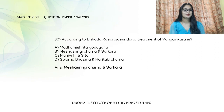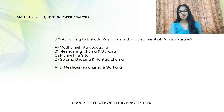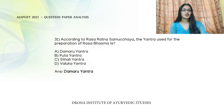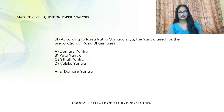According to Brihat Rasaraja Sundari, the treatment of Vangavikara is a direct question — the antidote given is Meshak Shrungi Churnam and Sharkara. According to Rasashastra Samukchya, the Yantra used for the preparation of Rasabhasma is Damaru Yantra.